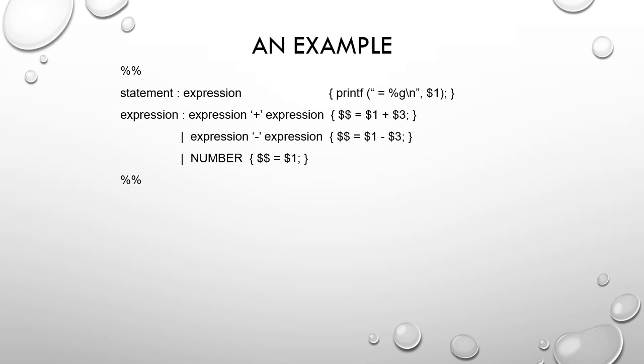In the example, statement produces expression is written as 'statement colon expression'. Expression produces expression plus expression is written as 'expression colon expression plus expression'. Similarly for expression minus expression and expression produces a number. Under the curly braces the semantic rules are written as C statements ending with semicolons. For example, in the second production it is written as $$ equals $1 plus $3, which will be explained in subsequent slides.